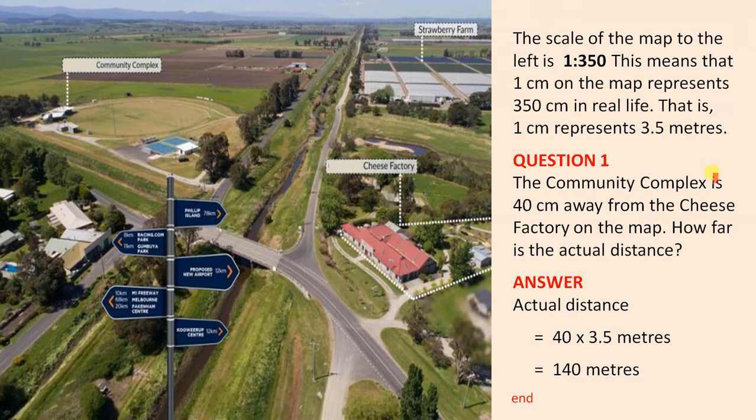So let's look at the question. The community complex is 40 cm away from the cheese factory. So there's the community complex and there's the cheese factory and on the map they're 40 cm away. How far is the actual distance? How far is the actual distance in real life?